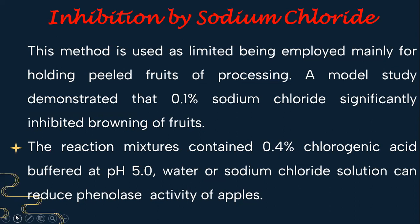Inhibition by sodium chloride is another way to prevent enzymatic browning. This method is mainly used for holding peeled fruits during processing. A model study demonstrated that 0.1% sodium chloride significantly inhibited browning of fruits. Reaction mixtures containing 0.4% chlorogenic acid buffered at pH 5 with water or sodium chloride solution can reduce the phenylase activity of apples.